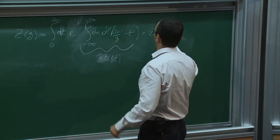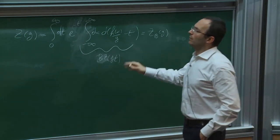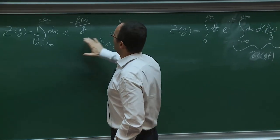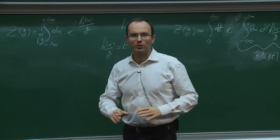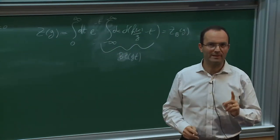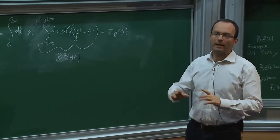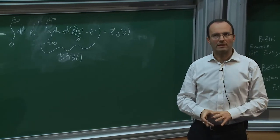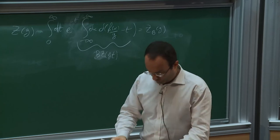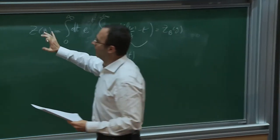This is essentially saying: if you only cross the single saddle at zero and there are no others, you are guaranteed to be Borel summable. Moreover, since you have directly manipulated your original integral into this Borel form, you automatically establish that Z_B(g) equals Z(g) — you don't need Watson's criterion or other mathematical conditions separately.